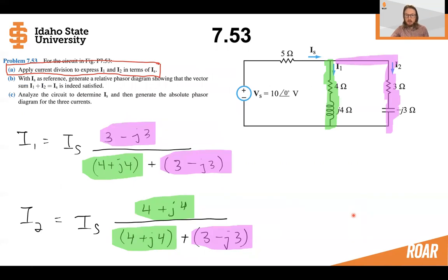First, we're going to apply current division. We can see there's two branches in this circuit. IS is going to split between the two. We're going to use current division, just like we used in many DC problems. To find branch I1, we'll need to multiply by the impedance in branch I2, divide by impedance in branch I1 and I2, and similar for current I2.